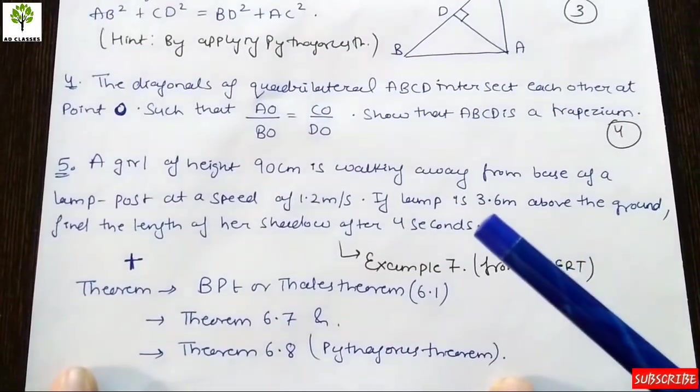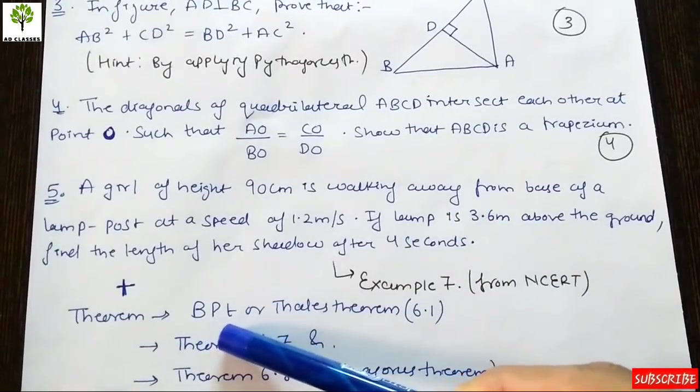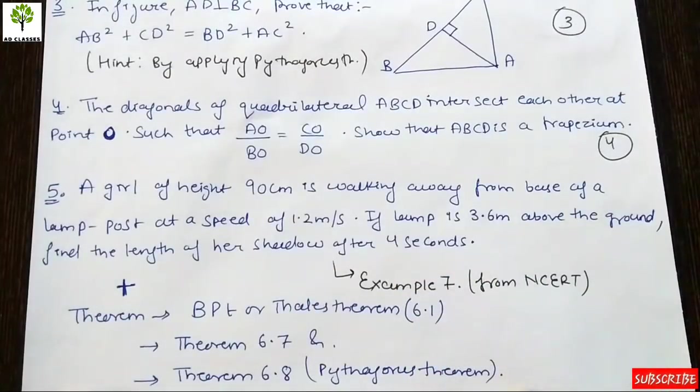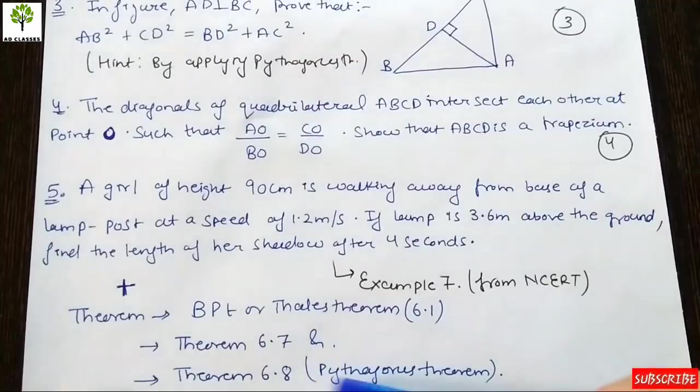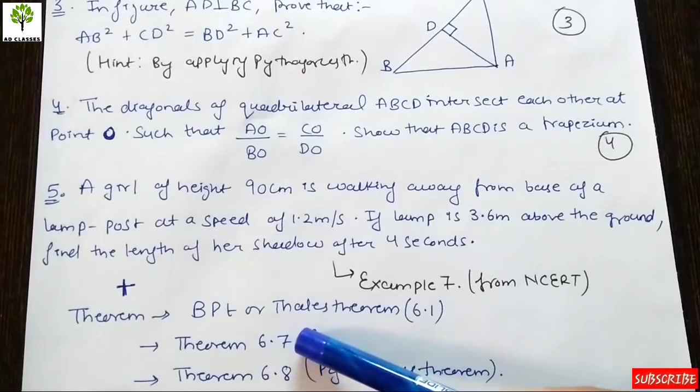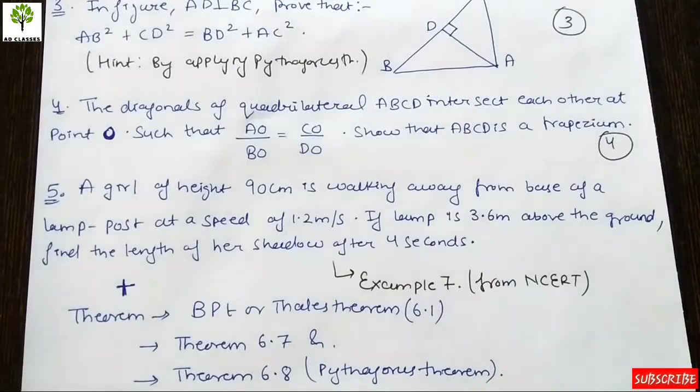If we look at this chapter, we should know the theorems: BPT Basic Proportionality Theorem which is Theorem 6.1 in the NCERT book, and we can prove Theorem 6.7 and 6.8. These theorems are important and you should know these proofs.